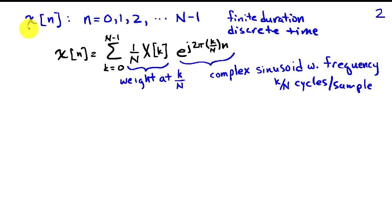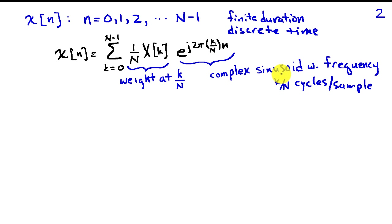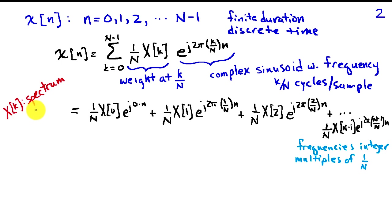The DFT assumes that we have a discrete time signal of finite duration. We represent that by assuming samples from n equals 0, 1, 2, up through capital N minus 1. We represent x of n as a weighted sum of complex sinusoids — this is very similar to a Fourier series. Our weights are 1 over N times uppercase X of k, which is the weight applied to frequency k over N. The complex sinusoids have frequency k over N cycles per sample, with frequencies ranging from 0 to N minus 1 divided by N. X of k is the spectrum of the discrete time signal.